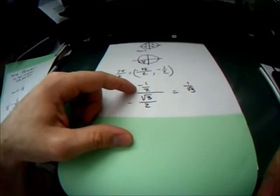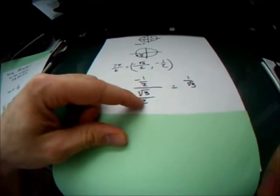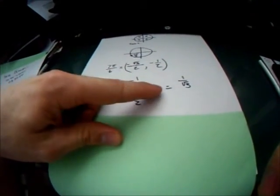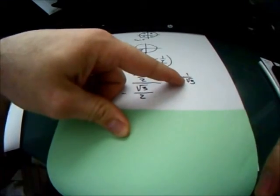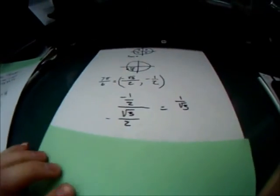Now these negatives cancel, your 2's cancel, so you're left with the simplified form of 1 over square root of 3, and that's what we had before.